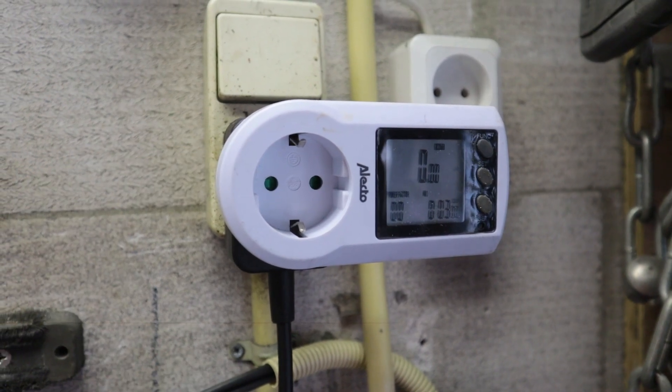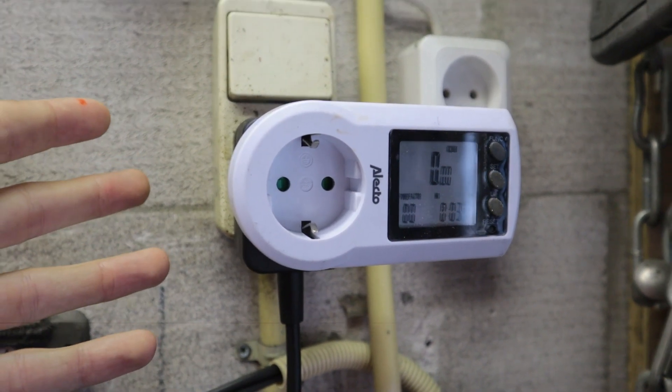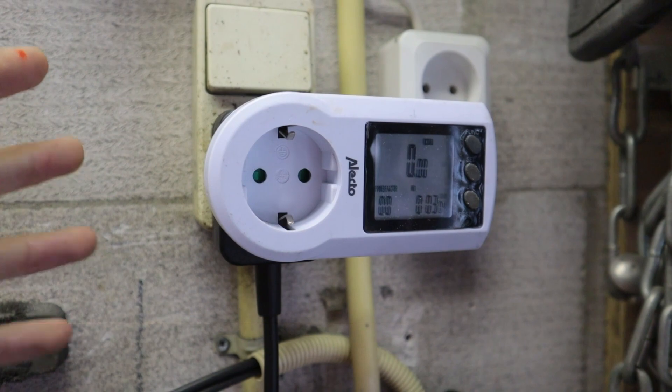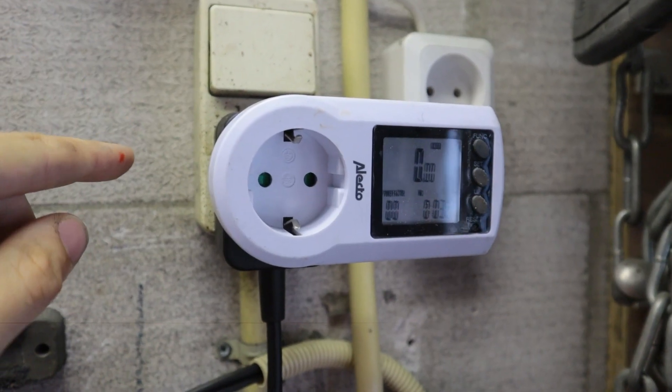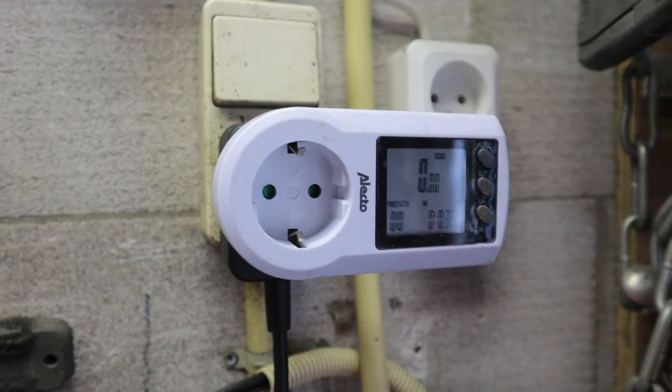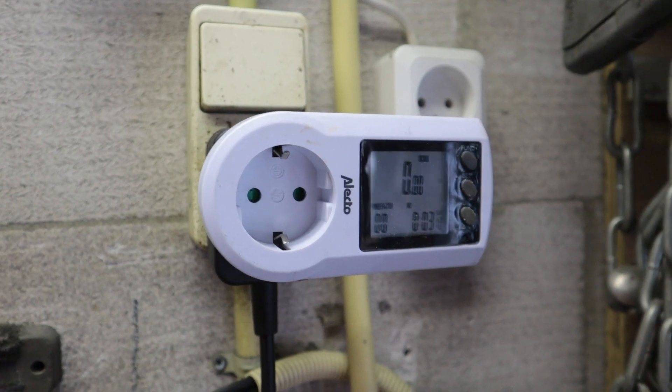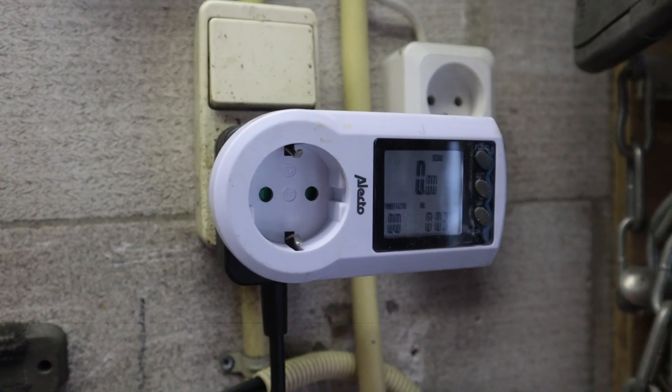So this only displays positive values or absolute value. So if you push 50 watts back into the grid, it'll just say 50 and not minus 50, so you can't actually tell which way the power is going.